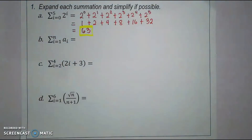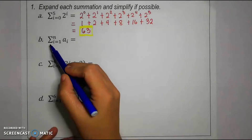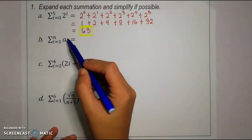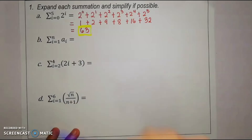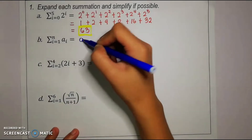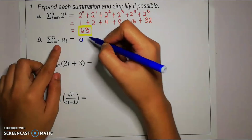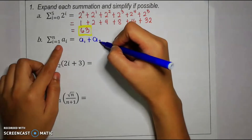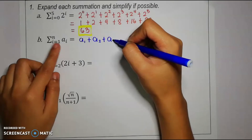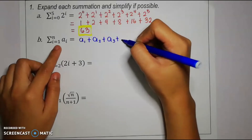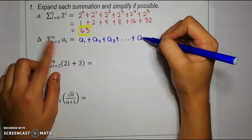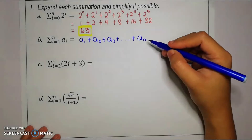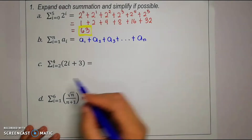For the second example, we have the summation of a sub i from i equals 1 until n. To expand, we simply replace i with the given values. So we have a sub 1 plus a sub 2 plus a sub 3, and since we do not know when this will end, we put an ellipsis and add until we reach a sub n. In this case, we cannot get a numerical sum for the sequence, so we stop right there.